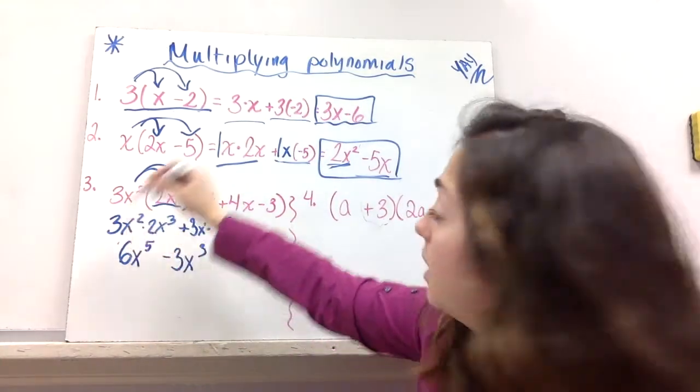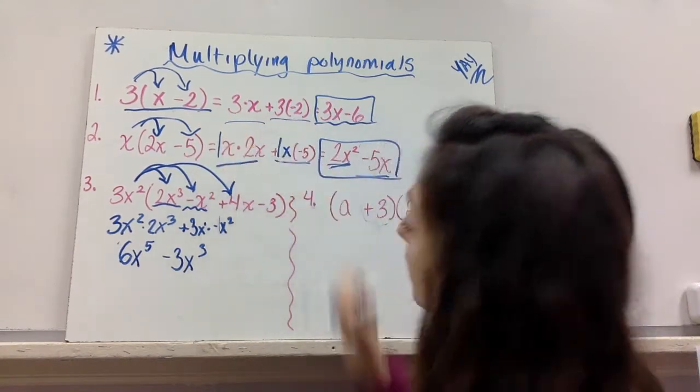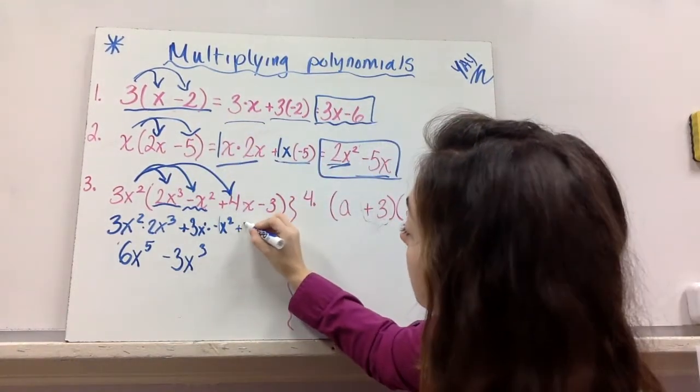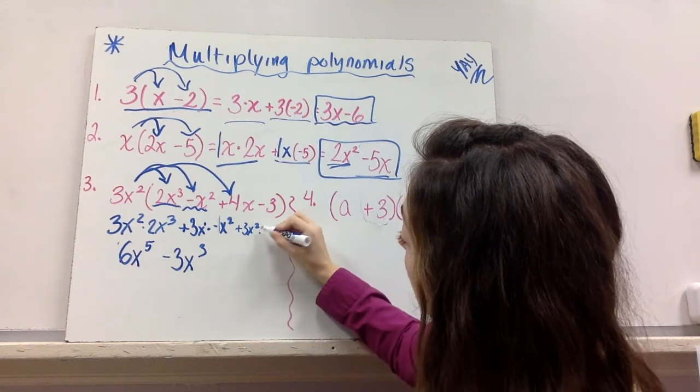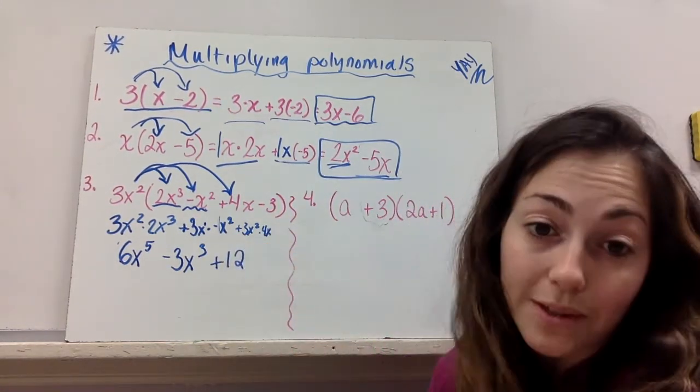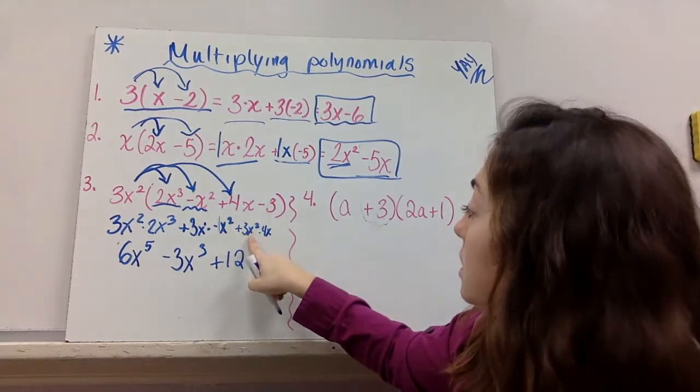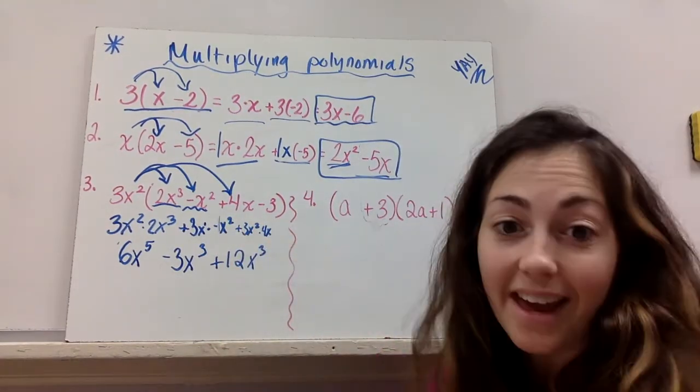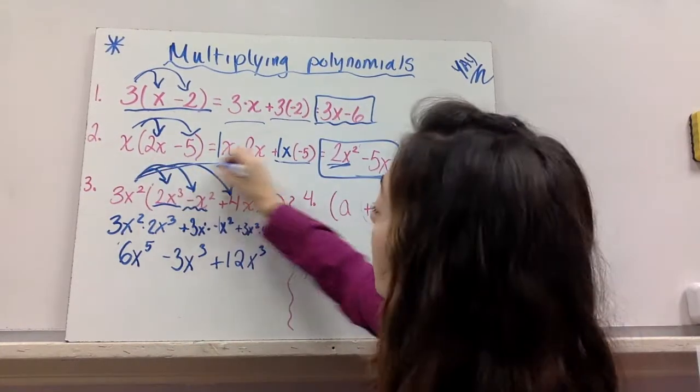Now I've got to multiply 3x squared times positive 4x. So plus 3x squared times 4x. 3 times 4 is 12. Both positives, so it's positive. x squared times an x is an x cubed. Hey, cool.